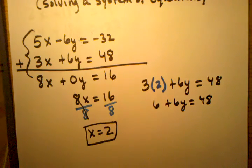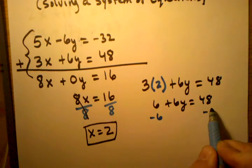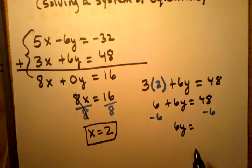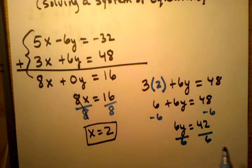Then I'm going to subtract 6 from both sides, which will get me 6y equals 42. And then I need to divide 6 on both sides. And that will get me, canceling that out, that will get me y equals 7.